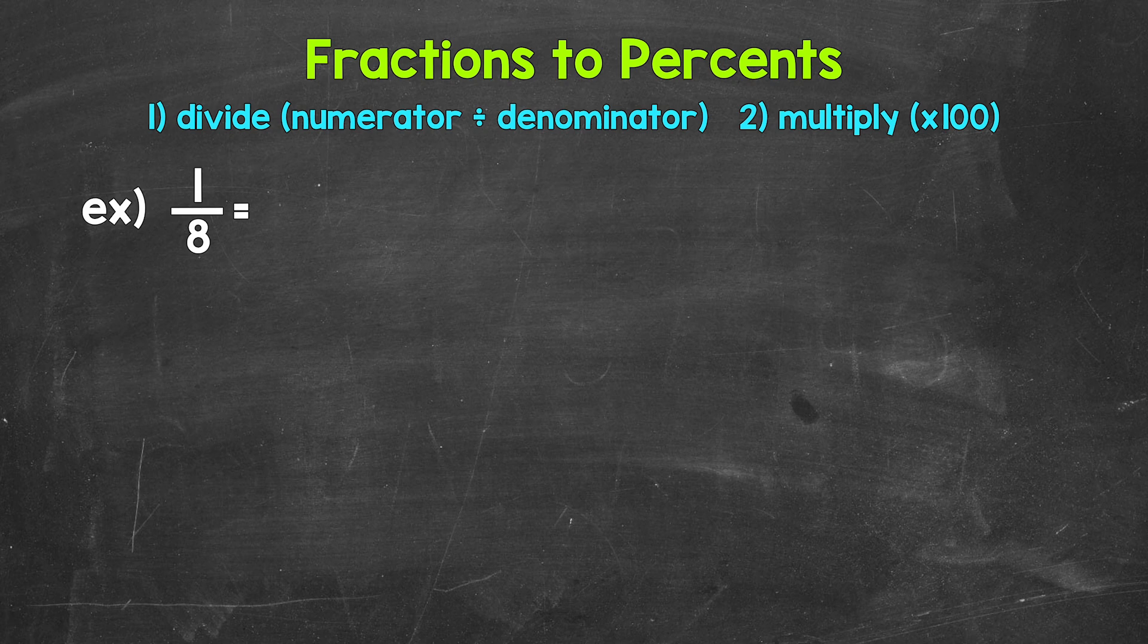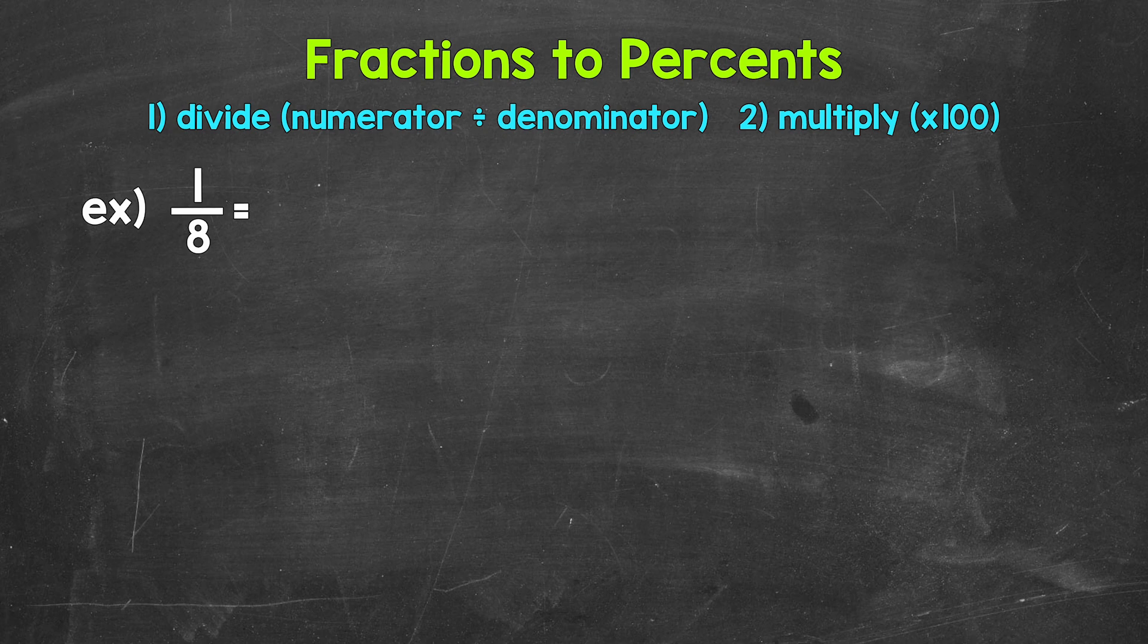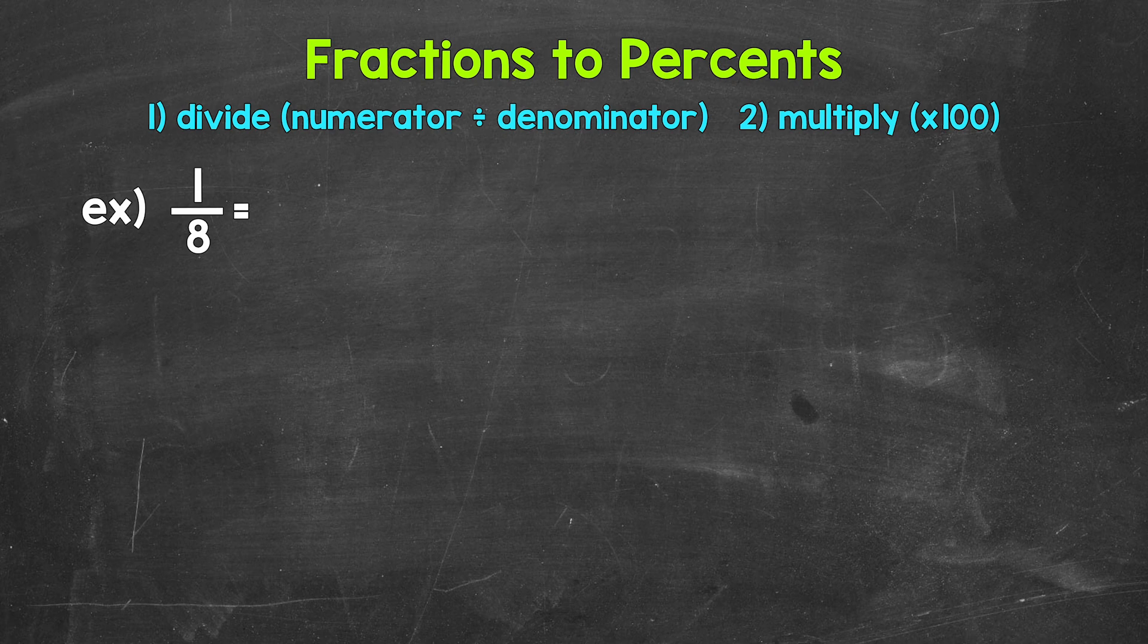Now when we convert a fraction to a percent, we can start by dividing the numerator, the top number of the fraction, by the denominator, the bottom number of the fraction. This will give us a decimal.